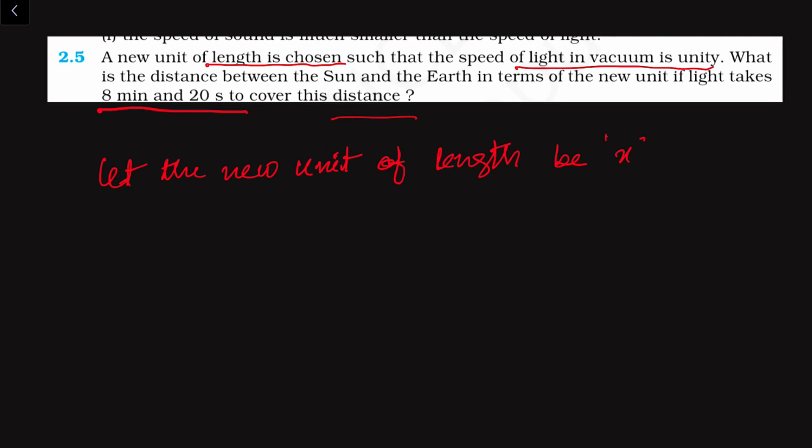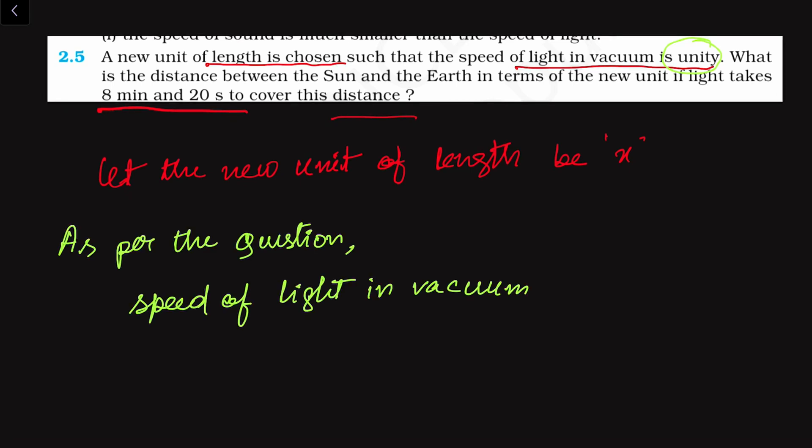As per the question, we are given that the speed of light in vacuum is unity. So we have to keep in mind that we have one new unit system per second. That means light travels this x length of distance per second. Speed of light is denoted with small c is unity, that means one new unit - new unit we have assumed to be small x - per second. This small x represents the distance traveled.